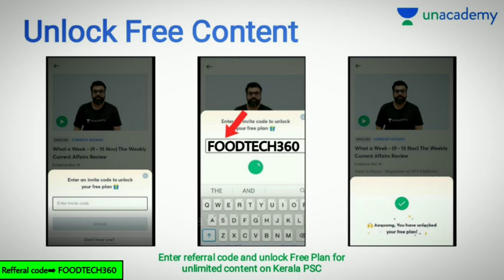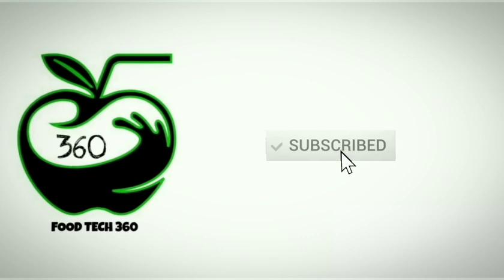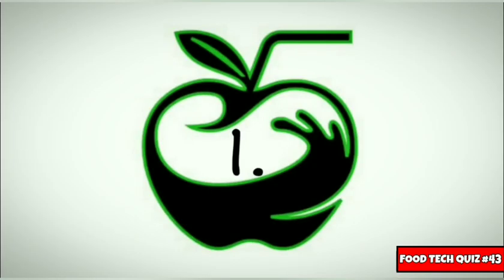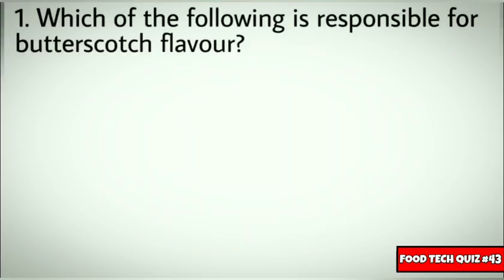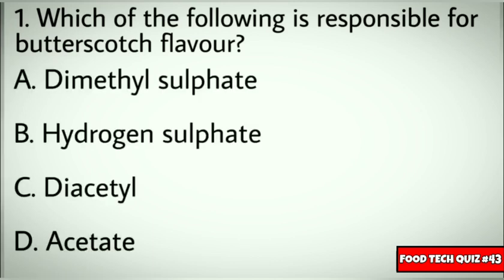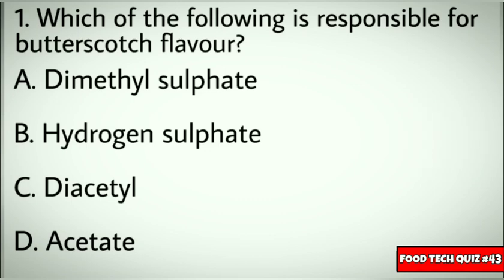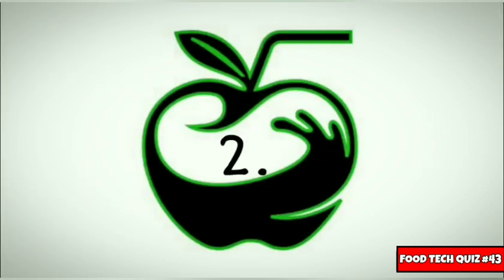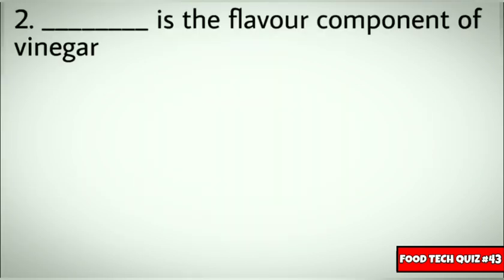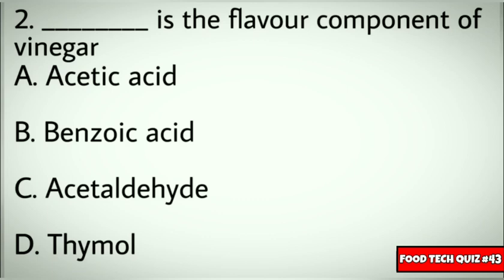Without any further delay, let's get started. Question number 1: Which of the following is responsible for the butterscotch flavor? Options: A) Dimethyl sulfate, B) Hydrogen sulfate, C) Diacetate, D) Acetate. Correct answer: C) Diacetate. Question number 2: Dash is the flavor component of vinegar. Options: A) Acetic acid, B) Benzoic acid, C) Acetaldehyde, D) Thymol. Correct answer: A) Acetic acid.